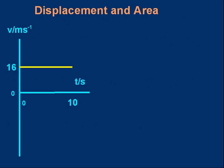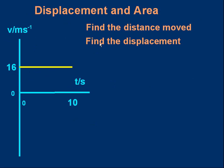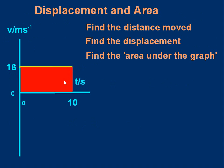Let's start with a problem. Here's a velocity-time graph. Look at the axes: velocity in meters per second, time in seconds, and we have a constant velocity of 16 meters per second. There are some questions: can we find the distance moved in 10 seconds? Can we find the displacement covered in 10 seconds? And can we find the area under the graph — the area between the yellow line and the time axis marked in red? You should try these for yourself before I go through the answers, so pause the video and try them now.